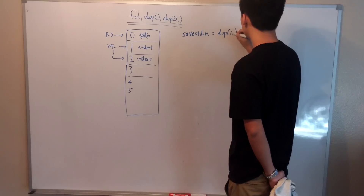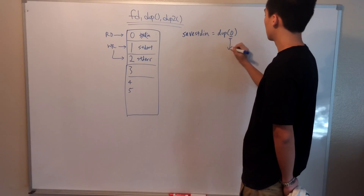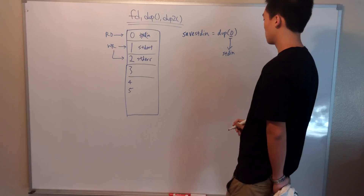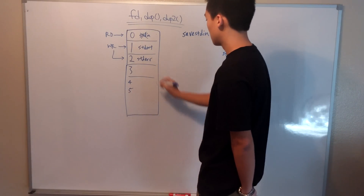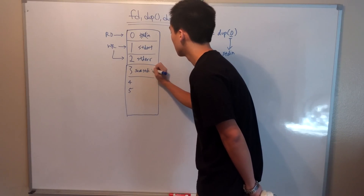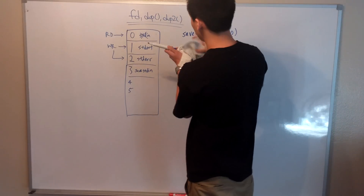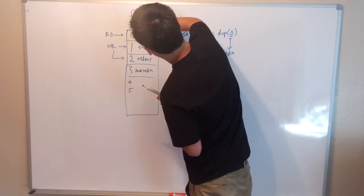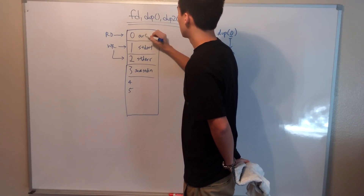By using the system call dup(0), dup will take what is in file descriptor 0 — standard in from the terminal — and duplicate it to the lowest free file descriptor, which in our case happens to be 3, and assign this number to our variable save_stdin. Now that the standard in file is saved within file descriptor 3, we are free to fill slot 0 with our own file. Since the system will always read from standard in in slot 0, it will read from our file as standard in instead of standard in from the terminal.